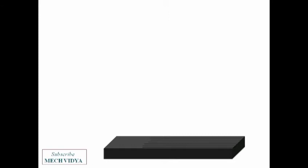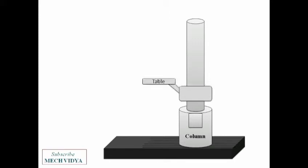Just over this base stands our column. The column supports all the important parts of the machine. First is the work table. The workpiece is kept over the table. The table along with the workpiece can slide up and down.